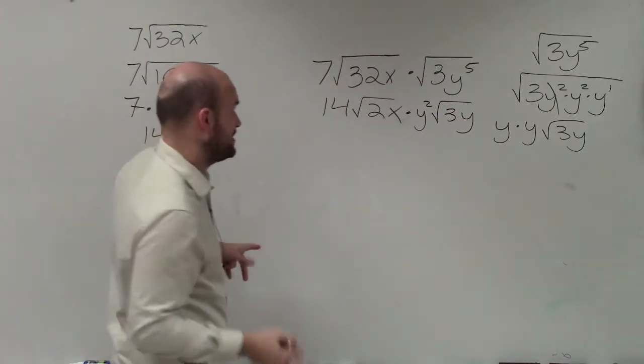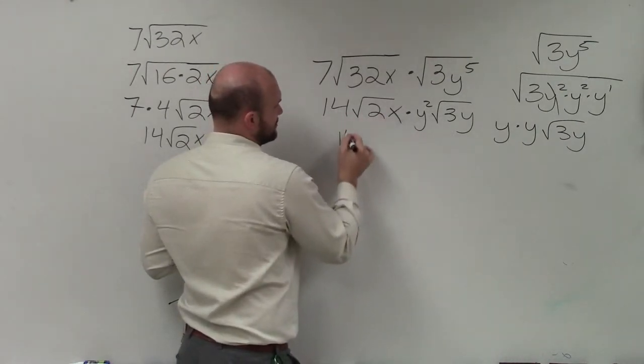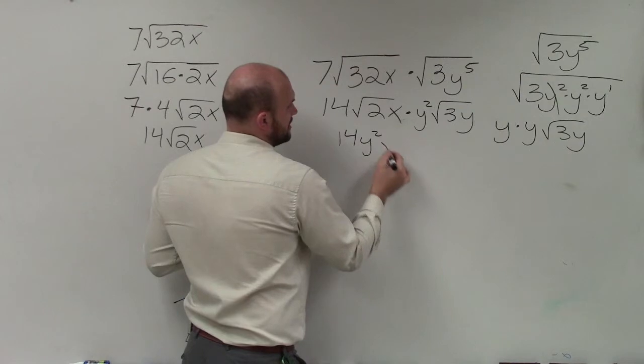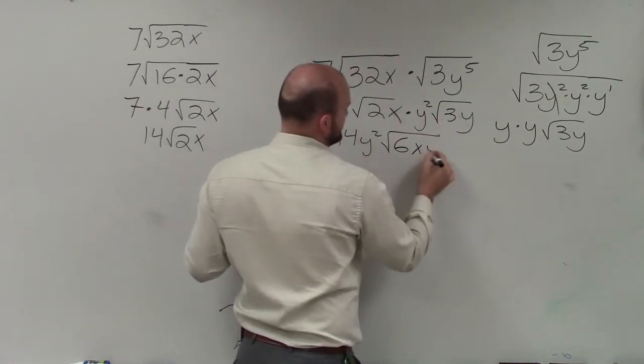Now, when I multiply radical expressions, I multiply my numbers outside, and I multiply my radicands. So 14 times y squared is 14y squared times the square root of 2 times 3, which is 6, x times y, which is xy.